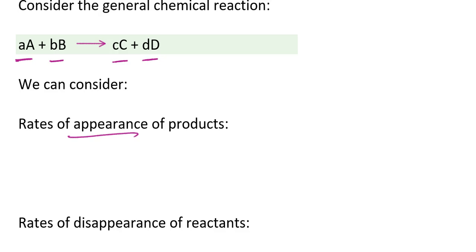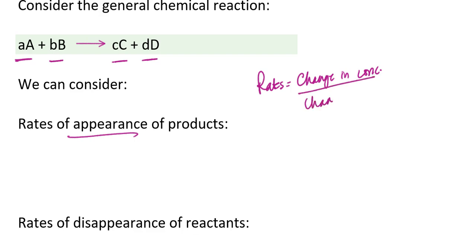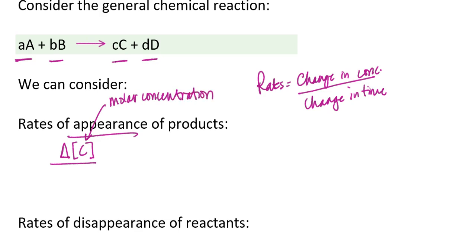If I wanted to show the rate of appearance of product C, the way that I would calculate that is basically a ratio of the difference of the two variables I'm interested in tracking. For a chemical reaction, rates represent change in concentration divided by change in time. So the rate of appearance of C would be the Greek letter uppercase delta — meaning difference — applied to the molar concentration of C. This set of square brackets surrounding a species represents molar concentration, divided by the change in time, delta T.